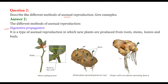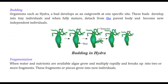In vegetative propagation, here we have a node with a bud at the axil. In the case of a potato plant, a new plant sprouts from an eye — this is the eye of the potato. In ginger, a new plant sprouts from the ginger itself.